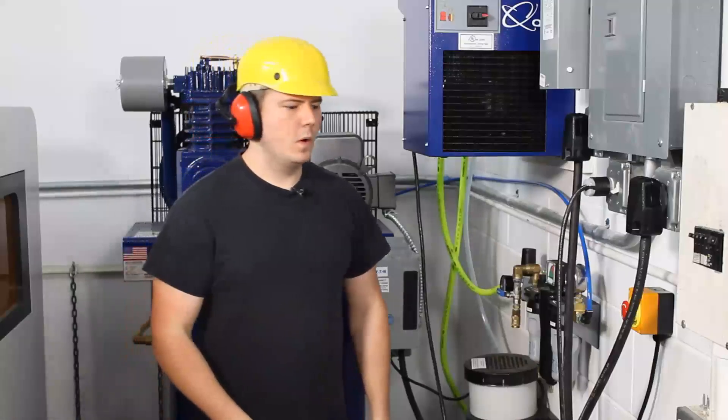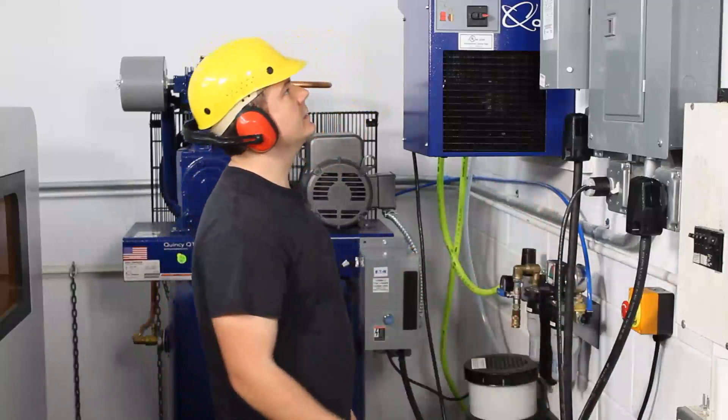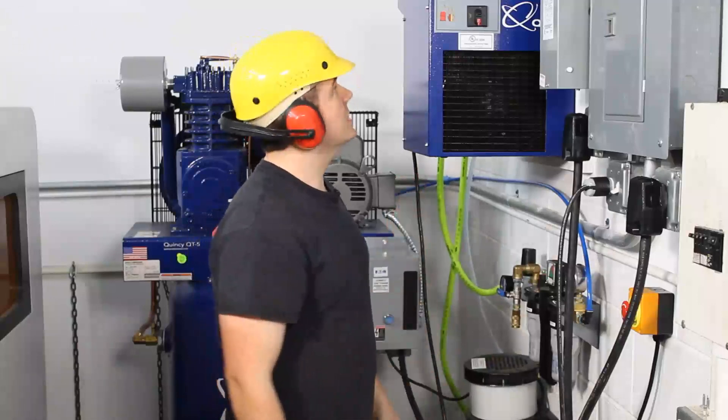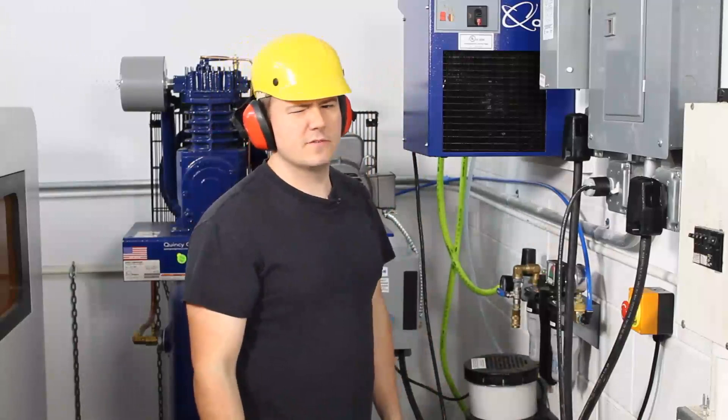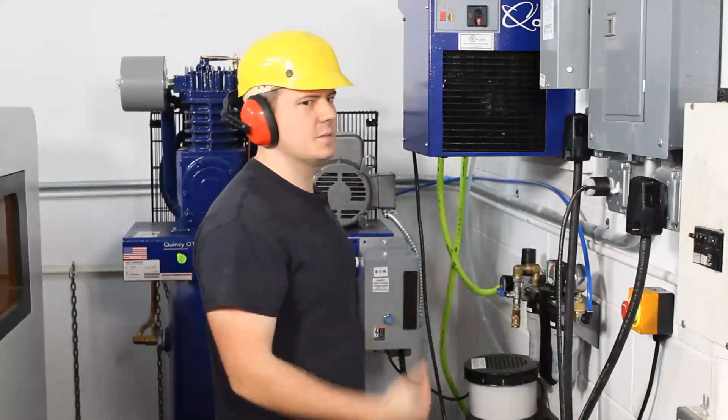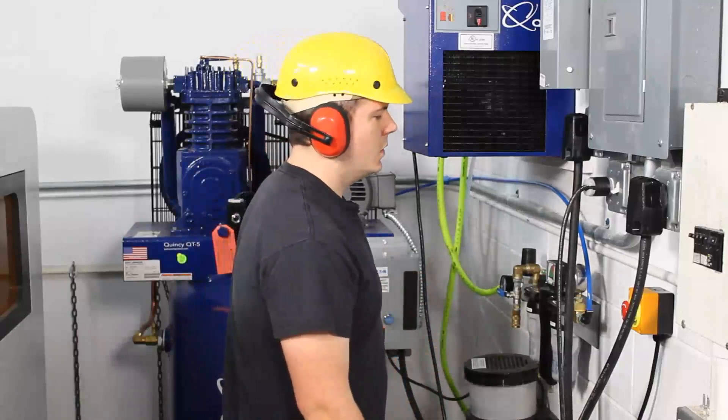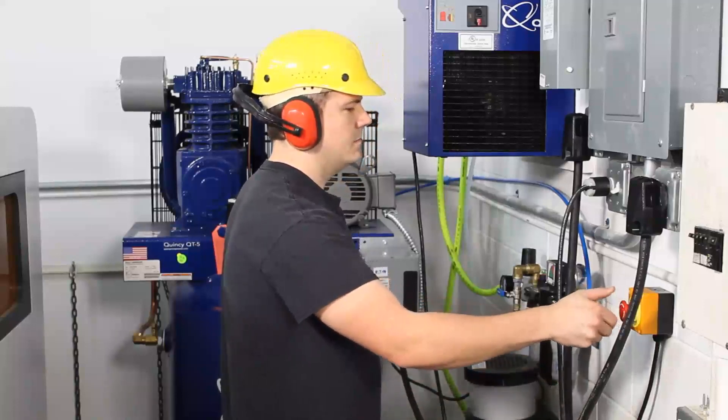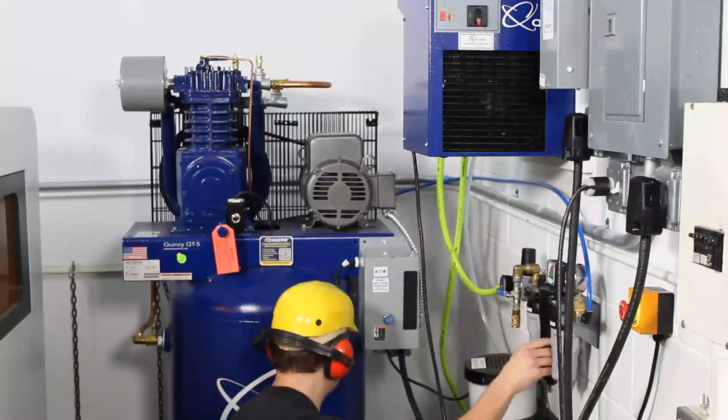So to start the compressor up, what we're going to do, we're going to have everything plugged in. We're going to turn our dryer on first. Give that just a little bit to cool down. It goes to 38 Fahrenheit. Of course, if you're in a different country, it'll probably be in Celsius. It's very near freezing, but just above it. Once that warms up a little bit, we'll go ahead and turn the compressor on. Okay, so it's still above its set pressure, so we're going to open up this valve here.